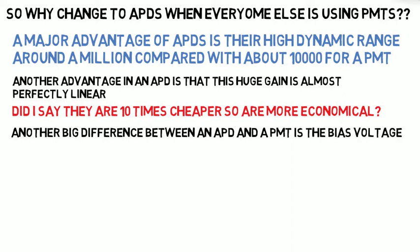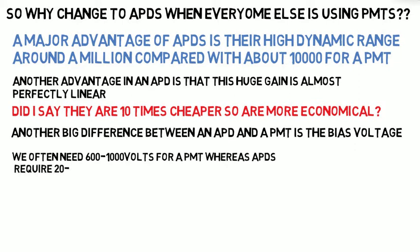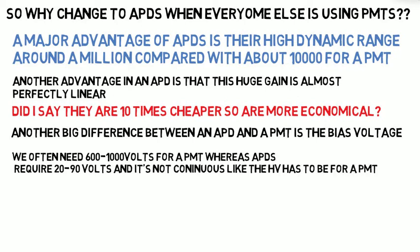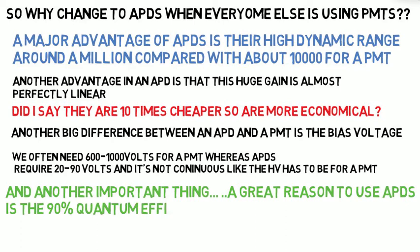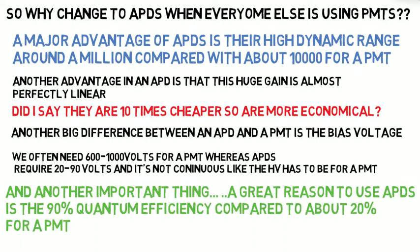Another big difference between an APD and a PMT is the bias voltage. PMTs typically require around 1,000 volts, whereas APDs are about 20 to 90 volts, and it's not continuous like the high voltage has to be on a PMT. The big deal for the latest APDs is their amazing quantum efficiency — near 90% compared to maybe 20% for a PMT.